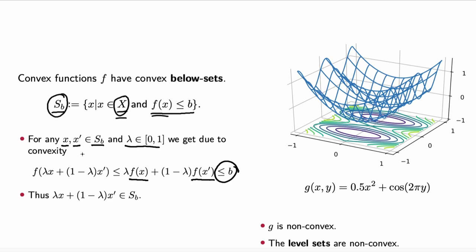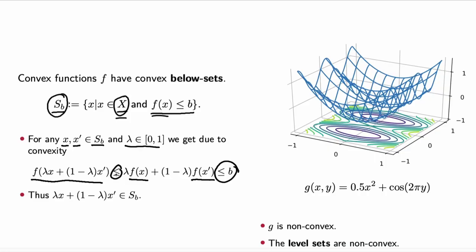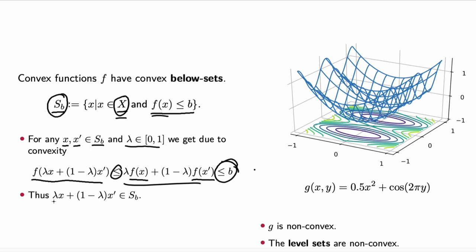We can prove convexity of below-sets quickly. Say we have two points x and x prime from the below-set S_B of a convex function, and some lambda between 0 and 1. The function values of x and x prime are both smaller or equal to B; otherwise, they wouldn't be in S_B. Thus, lambda times f(x) plus 1 minus lambda times f(x prime) is also smaller or equal to B. Since f is convex, f(lambda*x + (1-lambda)*x prime) is smaller or equal to this combination, hence also smaller or equal to B, meaning the whole line segment is in S_B.